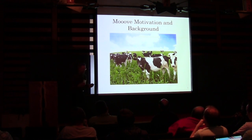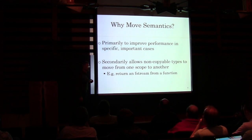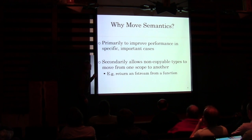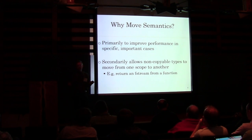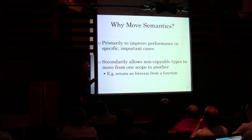Why did anybody introduce R-value references? We're going to improve performance in specific important cases. And almost as a side effect, we're going to allow people to make non-copyable types movable. But that was only a secondary issue — it was really about performance.